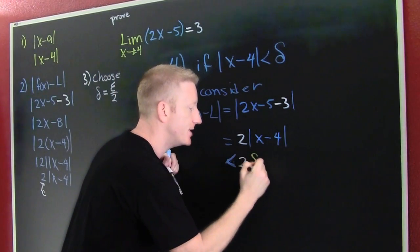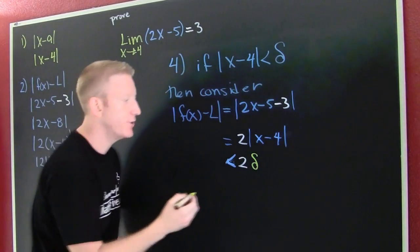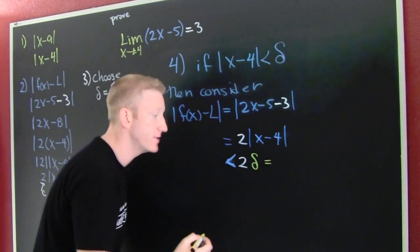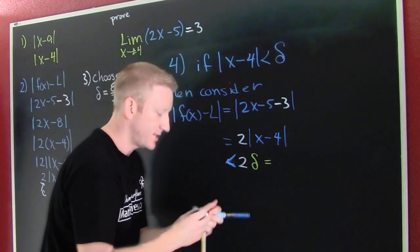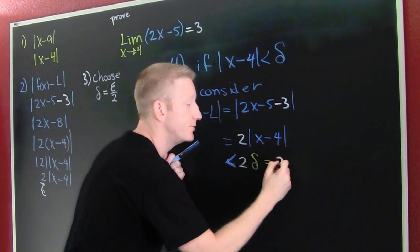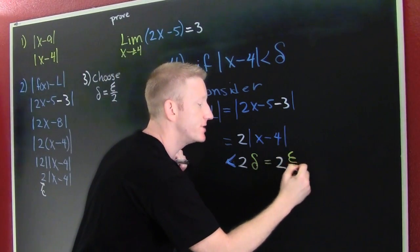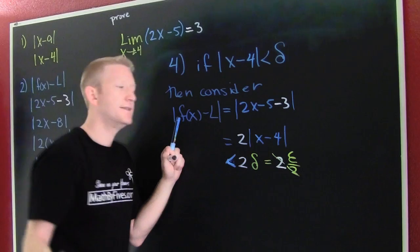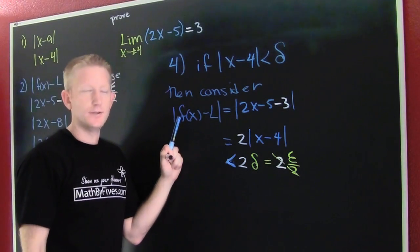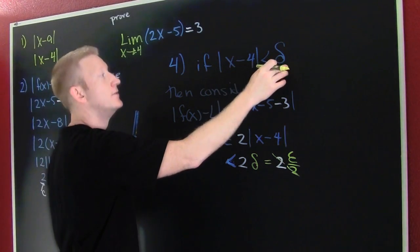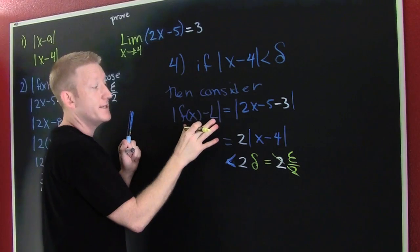Due to inequalities. But what was our choice of delta? Our choice of delta was to let delta be epsilon over 2. So now we have 2 times epsilon over 2. Divide, and we've done what we set out to do. If this is smaller than that, then we have shown that the function minus the limit is smaller than epsilon.